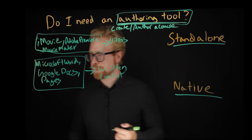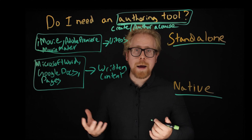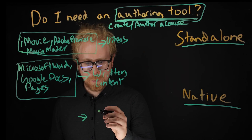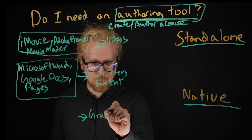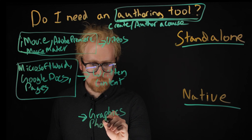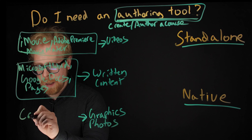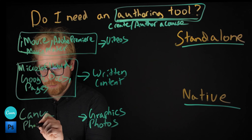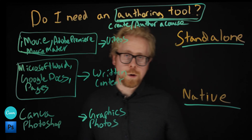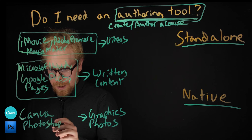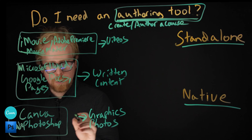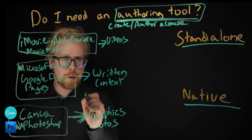Third example: let's say you have some graphics you want to create, or you want to edit some photos. That would be a graphics or photo editor — create graphics or photos — like Canva or Adobe Photoshop. Adobe actually appears on this board in three capacities. These are all tools to create graphics and photos.